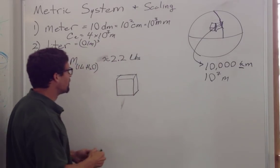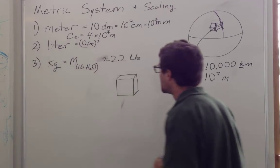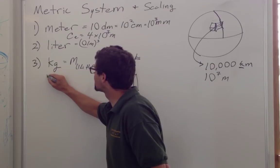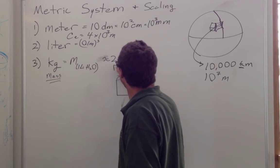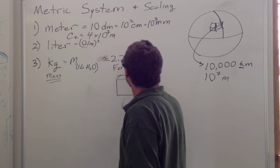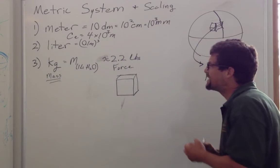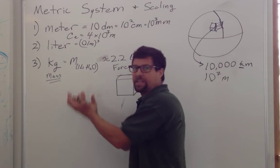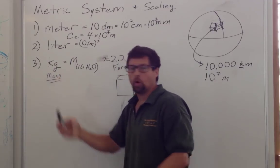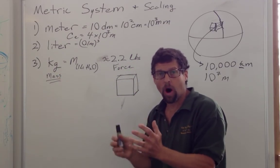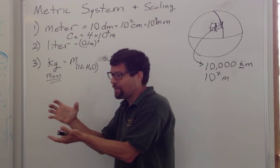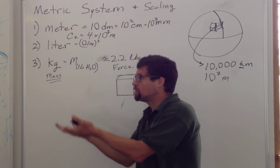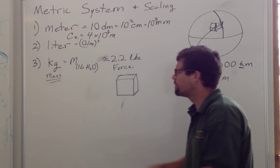Now we have a problem, because this is a unit of mass, how much substance there is in something, and this is a unit of force. So 2.2 pounds is actually the force of gravity acting on one kilogram of water. So the kilogram of water is the mass that I have. 2.2 pounds would be the force of gravity acting on it.